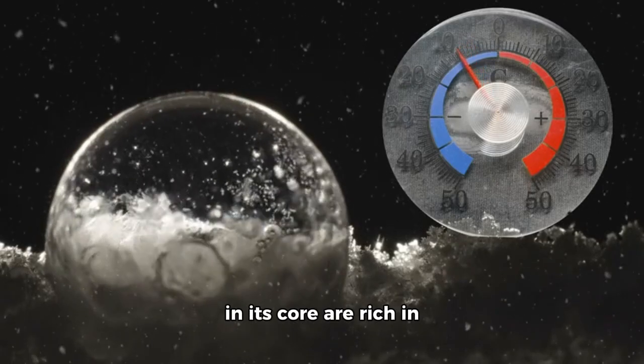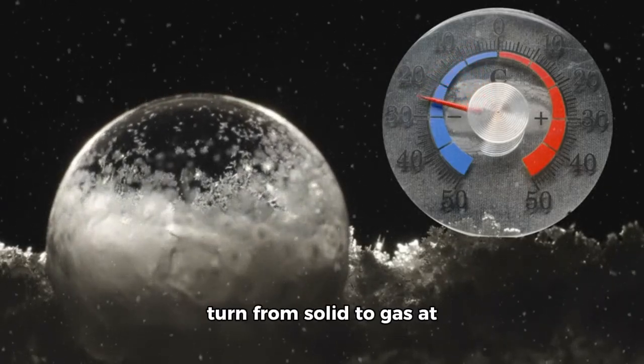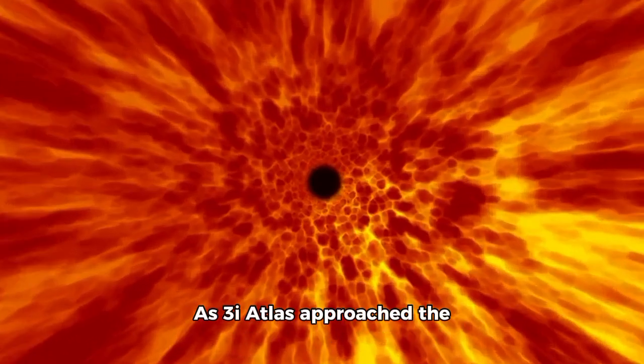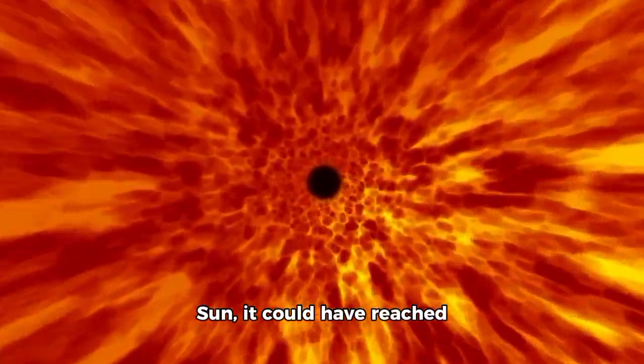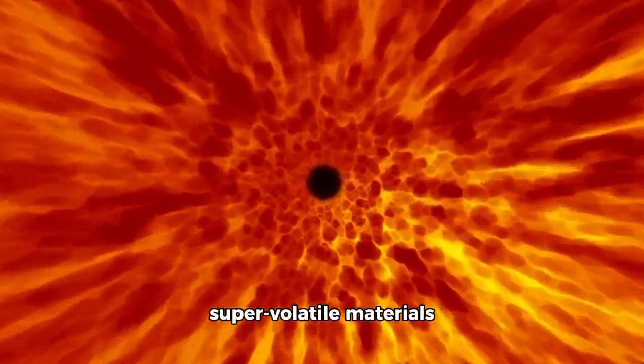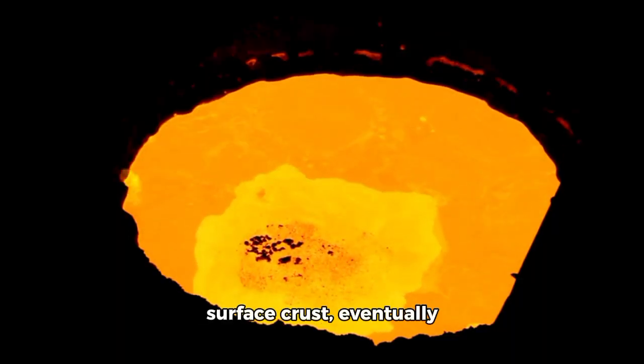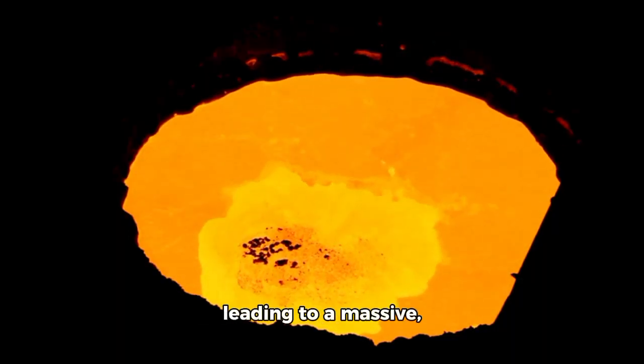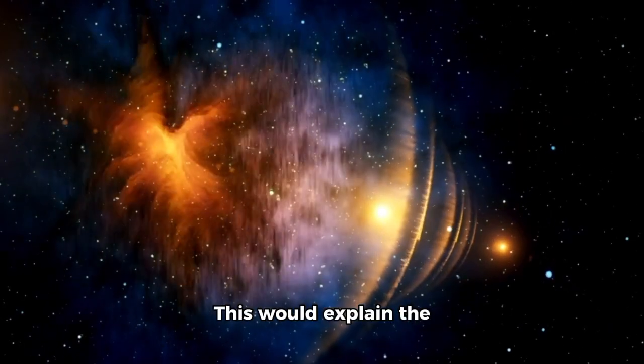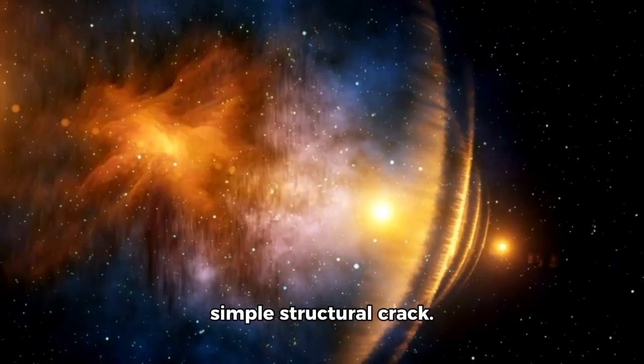What if the frozen gases in its core are rich in carbon monoxide or nitrogen, substances that turn from solid to gas at much lower temperatures than water? As 3I Atlas approached the sun, it could have reached the boiling point for these super-volatile materials buried deep inside. That could create immense pressure beneath the surface crust, eventually leading to a massive, violent eruption like a cosmic geyser going off. This would explain the suddenness and sheer scale of the flare far better than a simple structural crack.